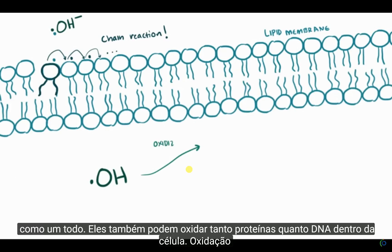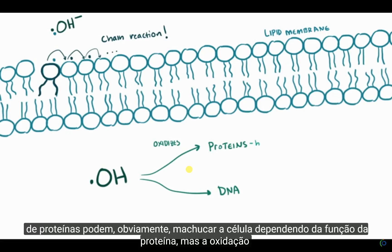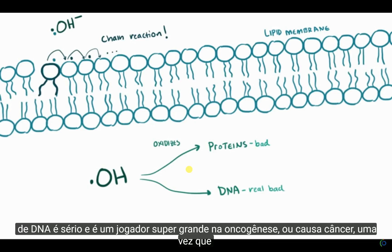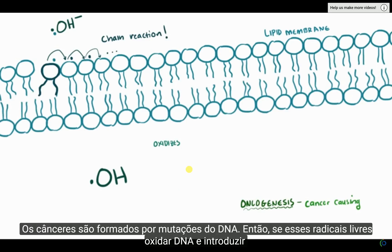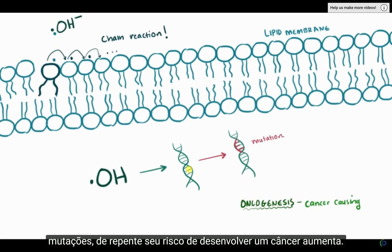Free radicals can also oxidize both proteins and DNA inside the cell. Oxidation of proteins can obviously hurt the cell depending on the protein's function, but oxidation of DNA is serious and is a super big player in oncogenesis — or causing cancers — since cancers are formed by mutations of DNA. So if these free radicals oxidize DNA and introduce mutations, your risk for developing cancer goes up.